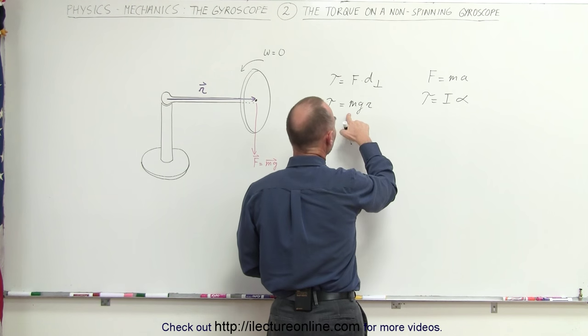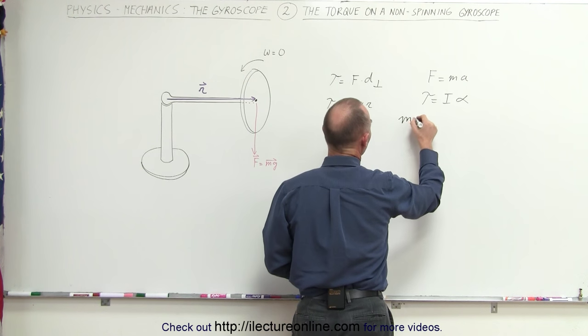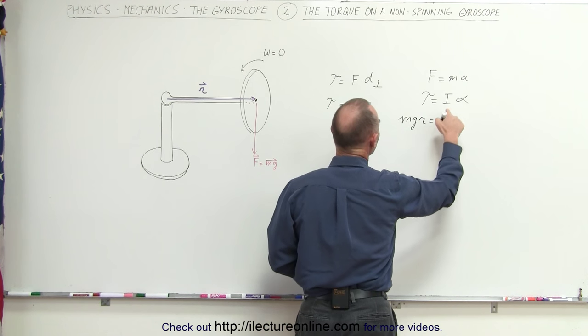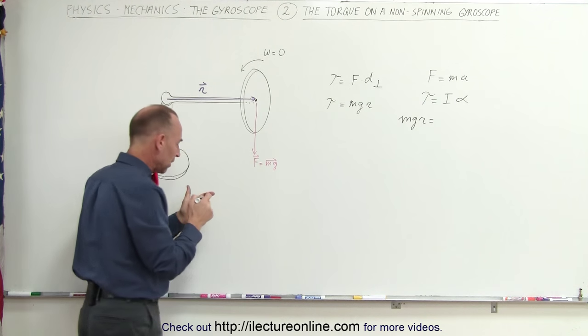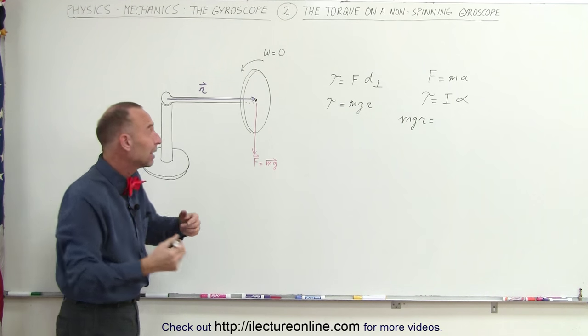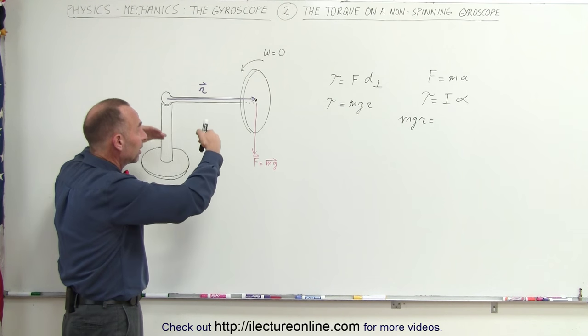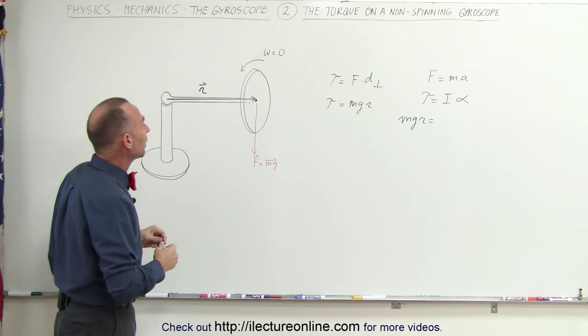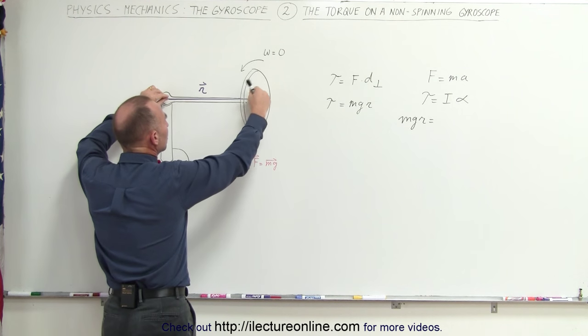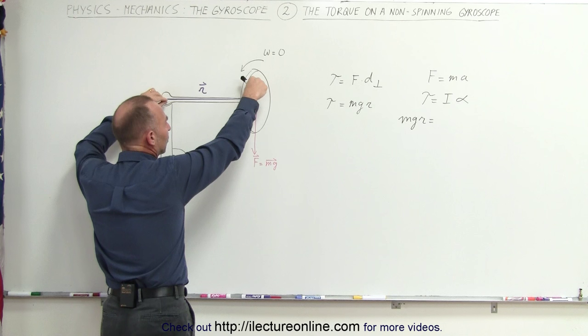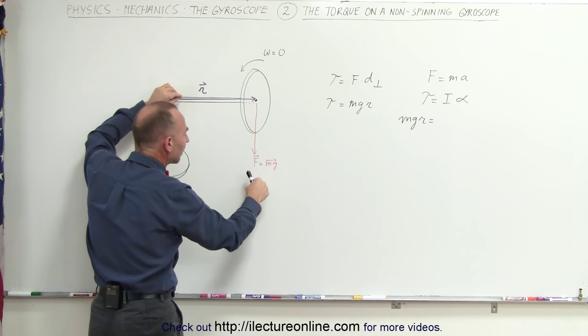If you plug in the value mgr for the torque, mg times r, and then for the moment of inertia of this gyroscope. Now when the gyroscope is not spinning, it's just a fixed object, just like a non-moving object, and it's sitting here.